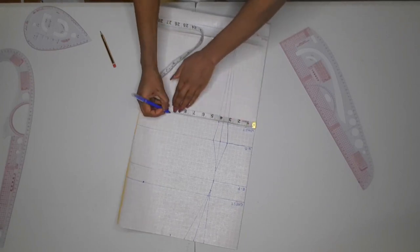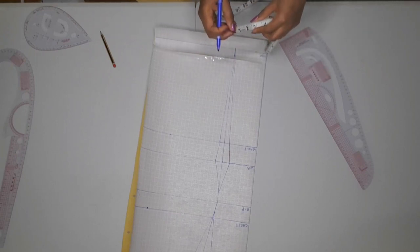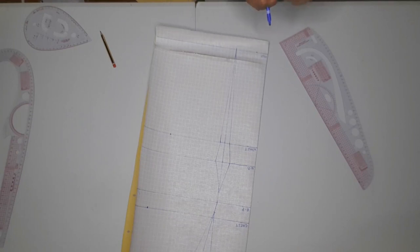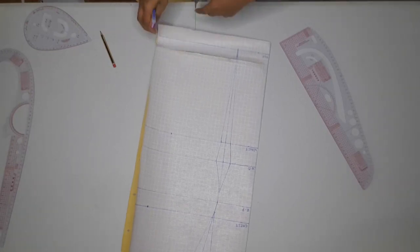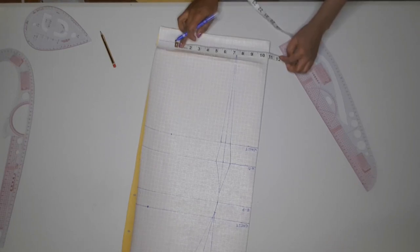Next we are moving to the hip. The quarter of my hip gives me 8.75, plus 1 inch to join the dart together, plus another 1 inch sewing allowance gives me 10.75. I'm going to be placing my 10.75 on my hip line and placing a mark right there.